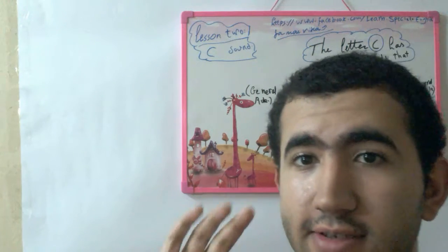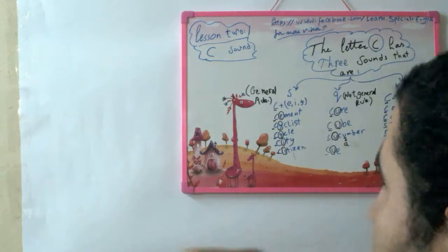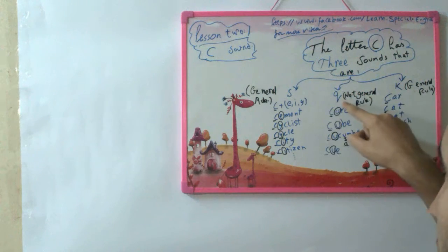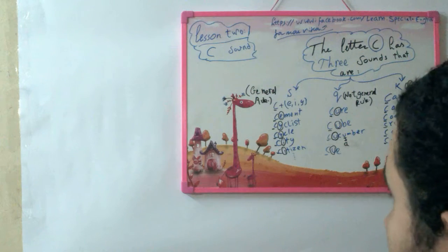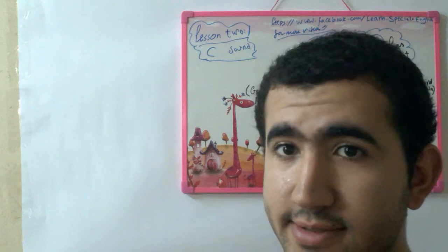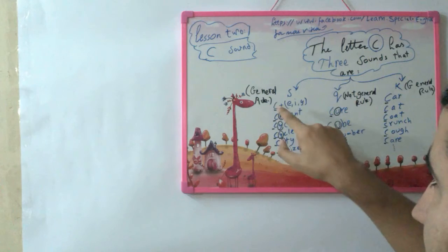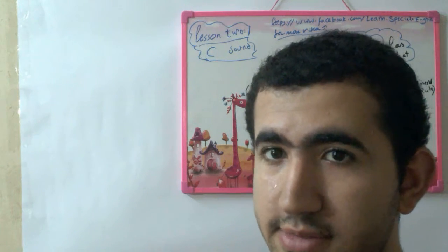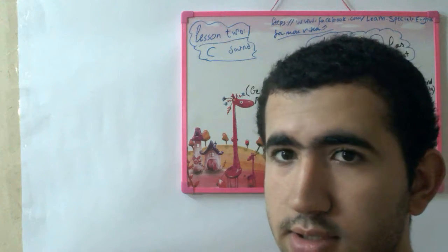The C letter has three sounds. The first one is S, the second one is Q, and the third one is K. When it's pronounced as S, the C letter is pronounced as S when it's followed by E, Y, or I. C plus I, Y, or E makes the S sound.